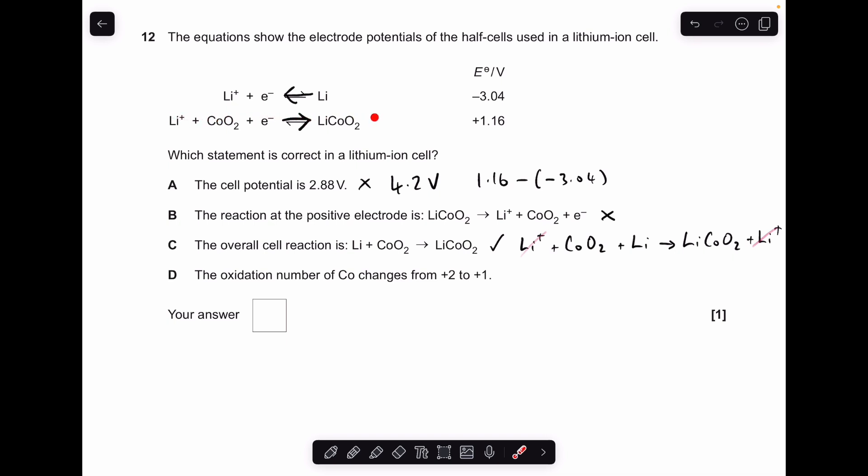Statement C is actually the right answer. And that's because we take this reaction here, run it forwards because it's got a more positive electrode potential. And we add to that the other one, but we put it in reverse. When you do that, you get this here and then you can cancel out the Li plus ions and it does leave us with that. Just for revision, we'll rule out D as well. So the oxidation number changes in the cobalt. It's actually going from plus 4 down to plus 3 and not plus 2 to plus 1. So C.